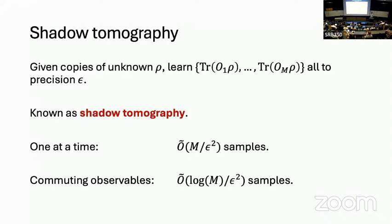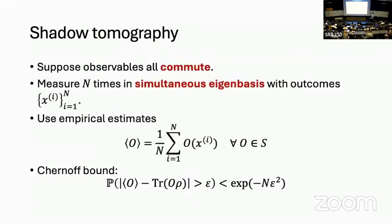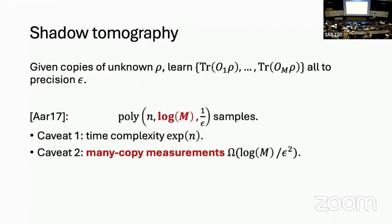This is not great if M is very large. If the observables commute, then we can do this with log M / ε² samples, by measuring in the simultaneous eigenbasis — intuitively you get information about all observables at the same time, and formally the empirical estimates with the Chernoff bound gives this guarantee. Somewhat miraculously, Scott Aaronson showed when he introduced this task that you can always get this log M scaling, which is extremely surprising and counter-intuitive.